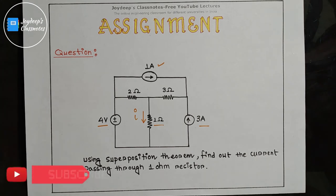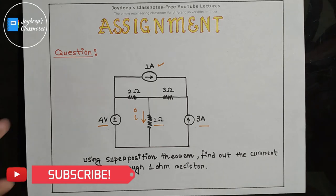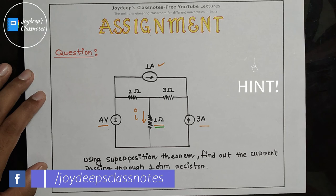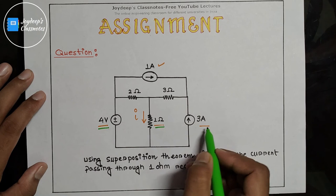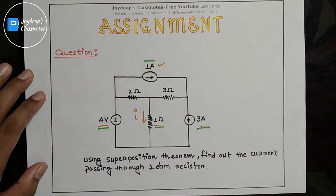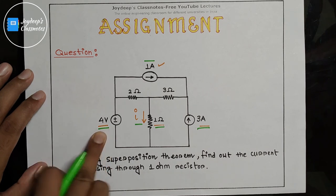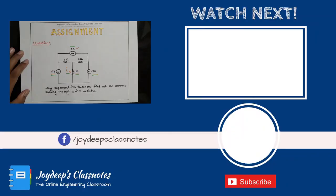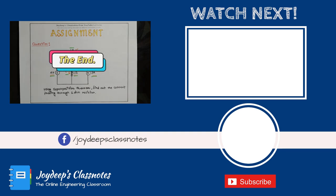Now it is your turn to solve a question. The question says: the circuit is given — using superposition theorem, find out the current passing through the 1 ohm resistor. In this circuit you have three independent sources, so you will have three contributions of this current. One contribution due to each source, and finally you add all those contributions to get the answer. Always remember the direction of the final current. If you find this video helpful, like it and share it with your friends. Thanks for watching. See you in the next video.